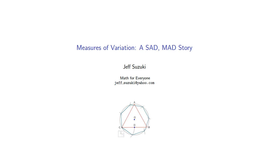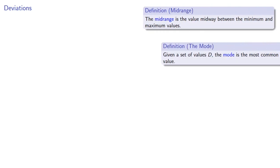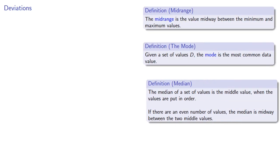We'll introduce some measures of variation — a sad, mad story with many important implications. So far we've introduced several measures of center, like the midrange, mode, median, and mean.